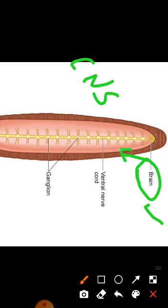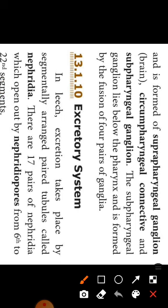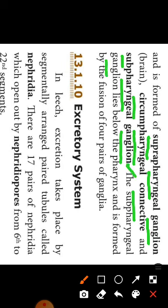What is ganglion? Ganglion is sac-like swelling. The nerve ring surrounds the pharynx. The pharynx is formed of three parts: suprapharyngeal ganglion, circumpharyngeal connective, and subpharyngeal ganglion. The subpharyngeal ganglion lies below the pharynx. It is formed by fusion of four pairs of ganglia.